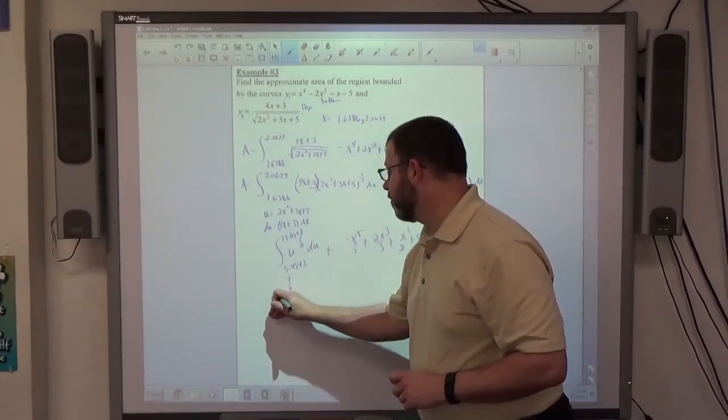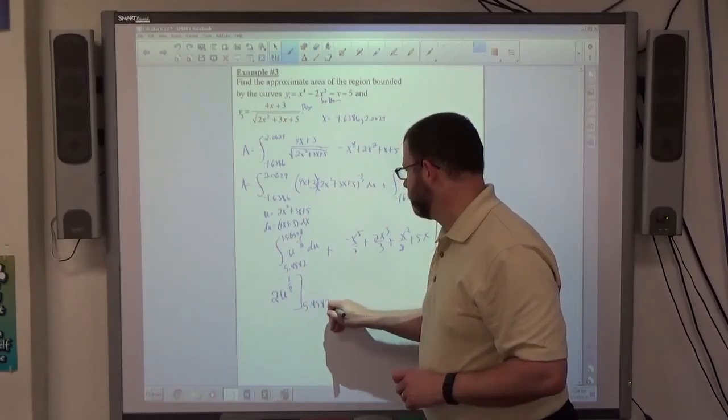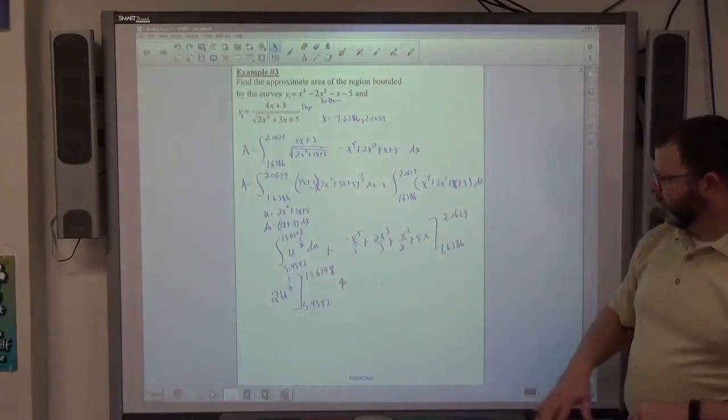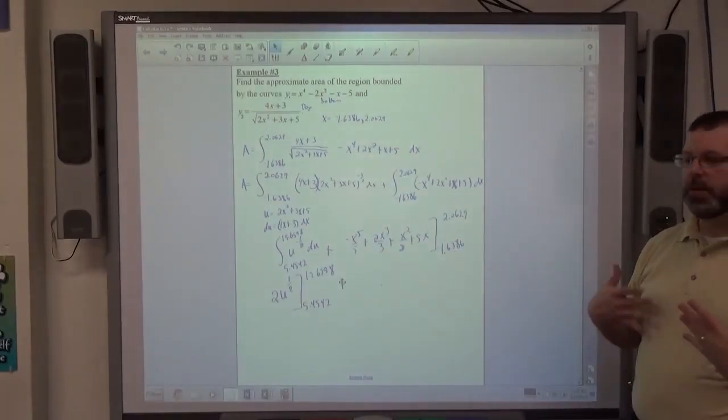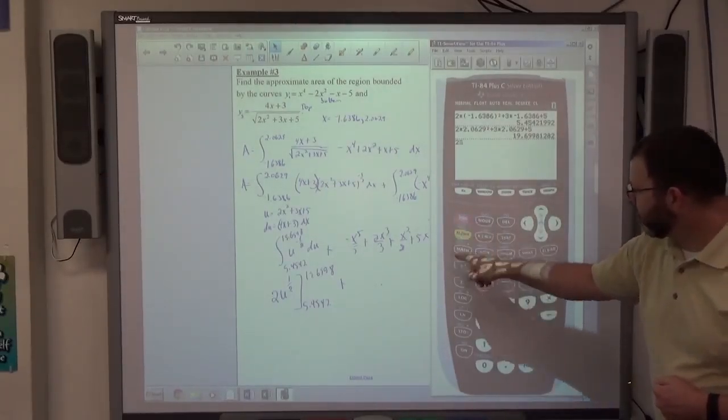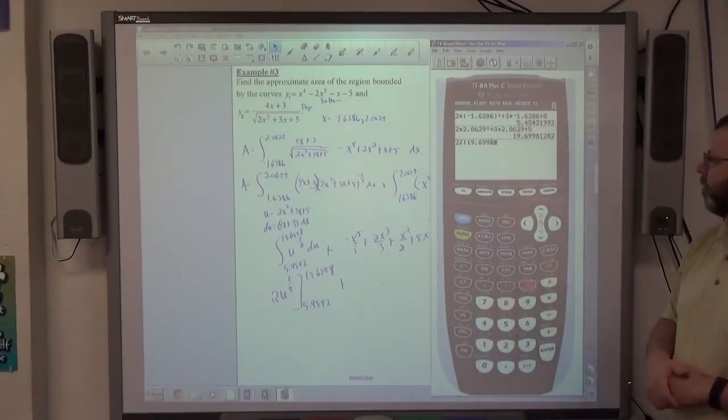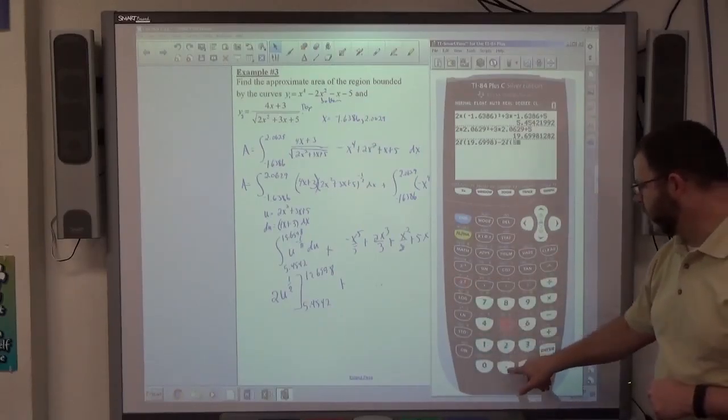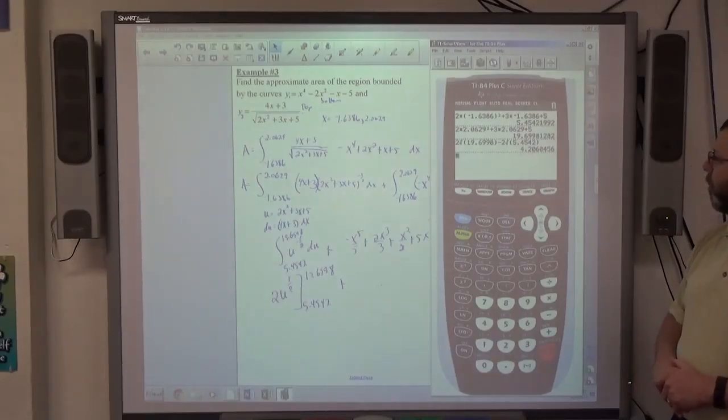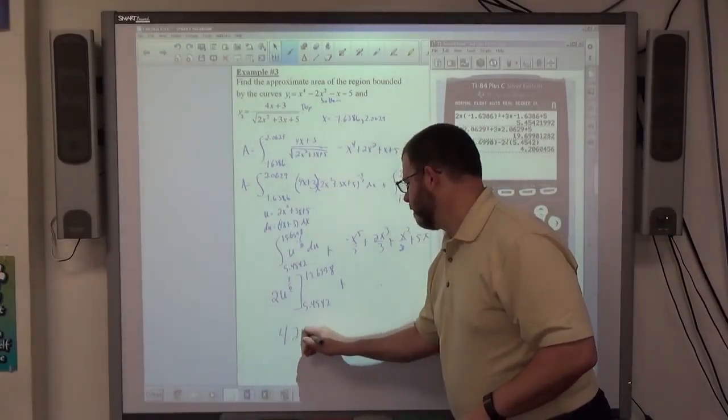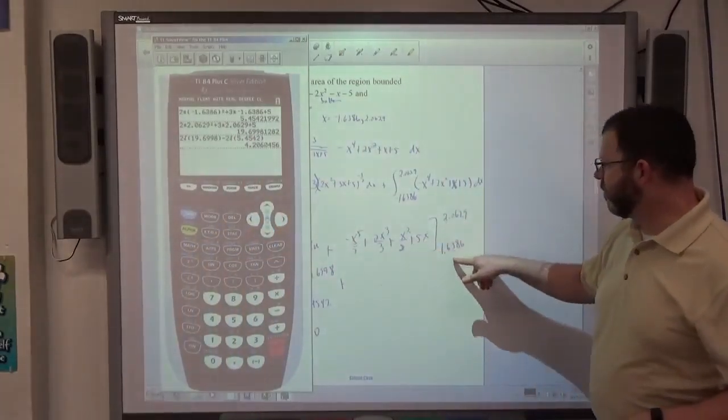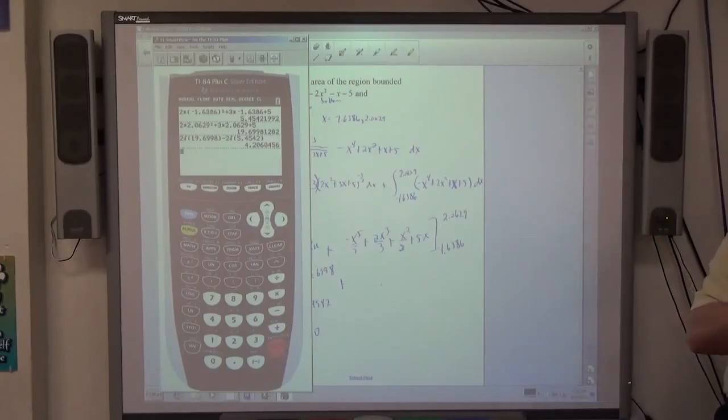This is going to be u to the 1 half over 1 half, so times 2. So I've got this plus this basically is what I've got going on here. So now I need to evaluate this, right? So they said find the approximate value, so that means I don't have to get exact stuff here. So if I do 2 square root of 19.6998 in parenthesis, minus 2 square root of 5.4542 in parenthesis—half power is just the square root, right? Two times each of those. I get 4.2060 for this part. For the other part, I've got this expression for these two numbers. It gets kind of ugly to have to type all that stuff into a 5th power to a 3rd power and everything like that.